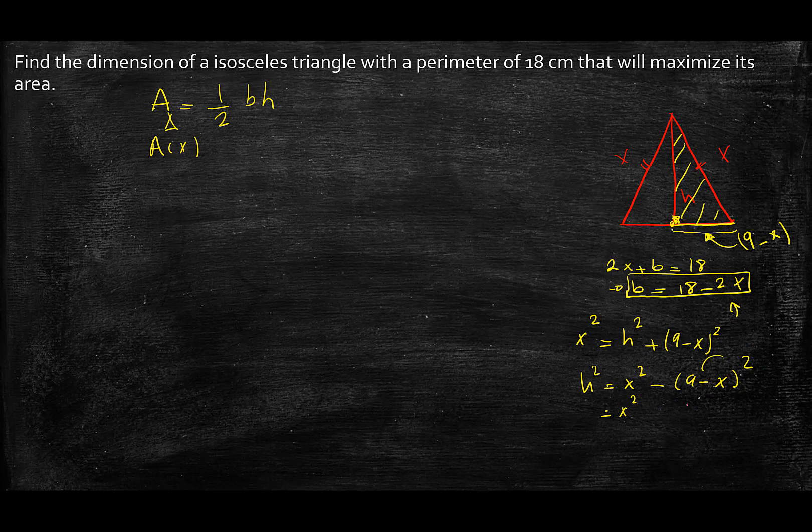Then I can expand what's in here. So this would be 81 minus 18x plus x squared. And if I multiply negative, I will have negative x squared plus 18x minus 81. These two will cancel out and h will just be square root of 18x minus 81.